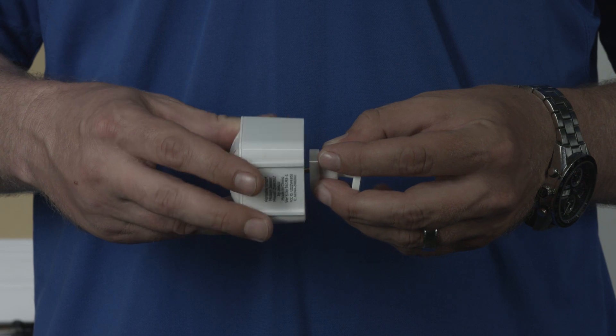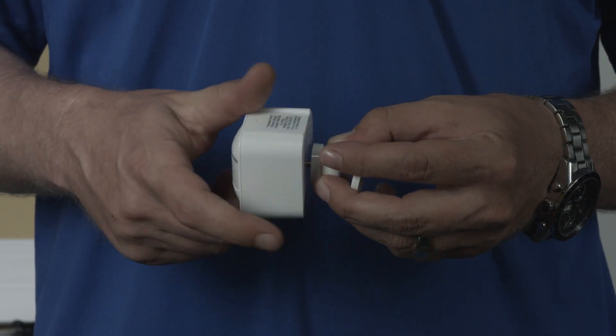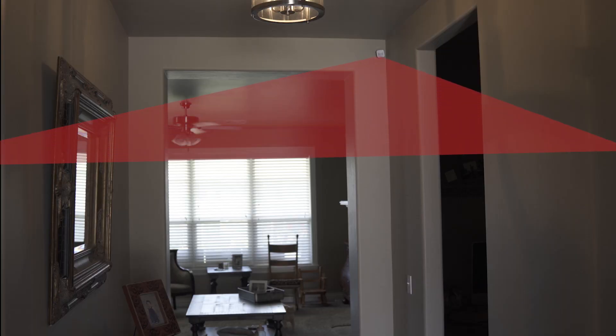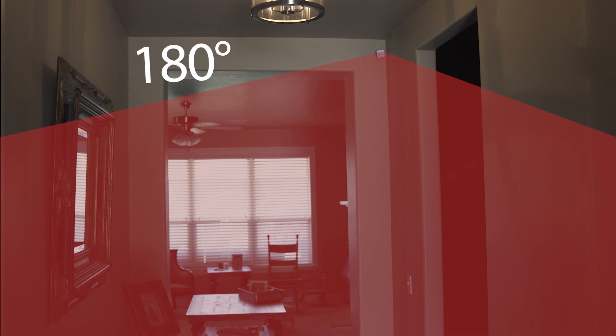Attach the sensor to the base and adjust it to the best angle for your space. When in the optimal position, the sensor covers a 180 degree range up to 45 feet away.